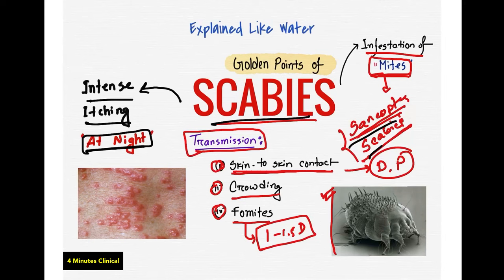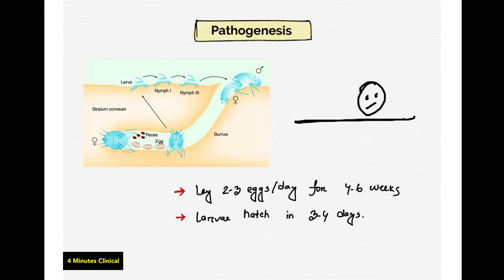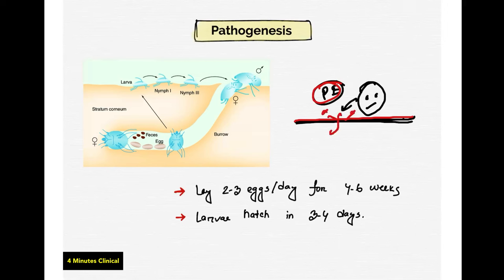This is an interesting pathophysiology — a picture of scabies pathogenesis. This is the skin, and this is the female mite. The female mite produces a proteolytic enzyme. This proteolytic enzyme acts superficially and causes a breakdown from the skin surface.